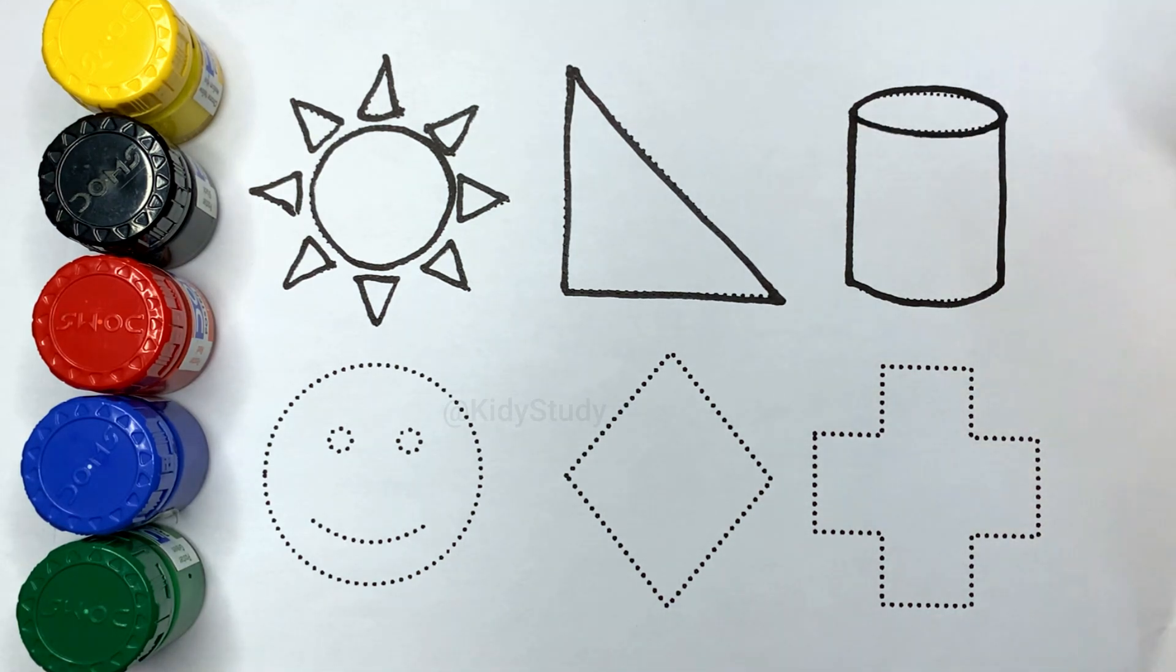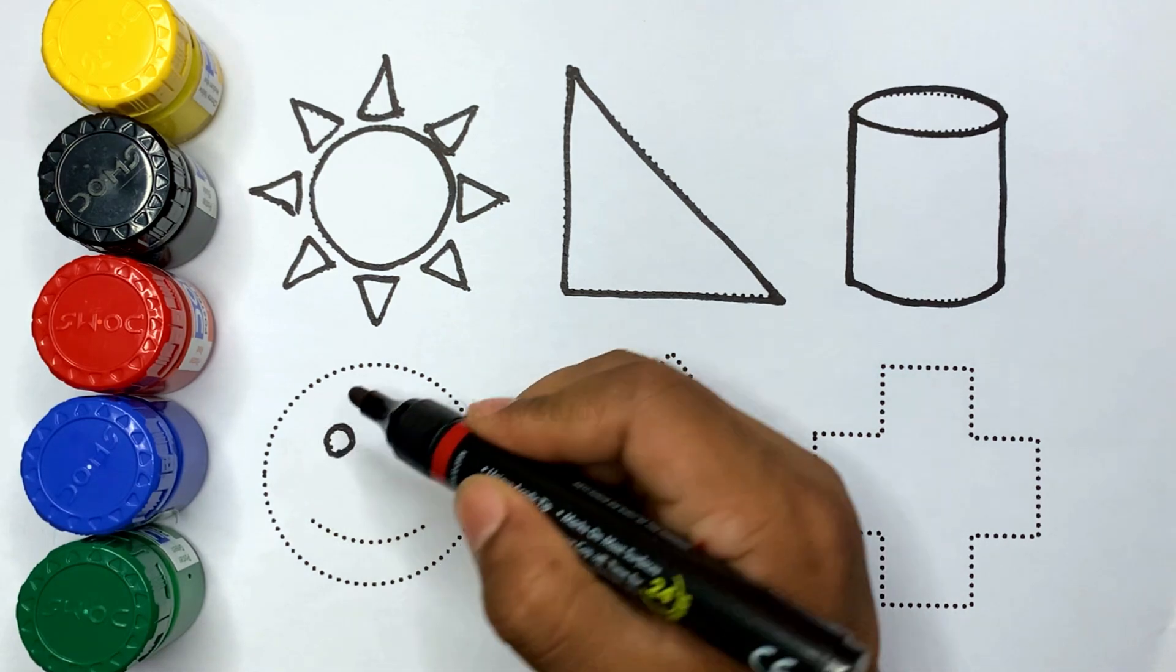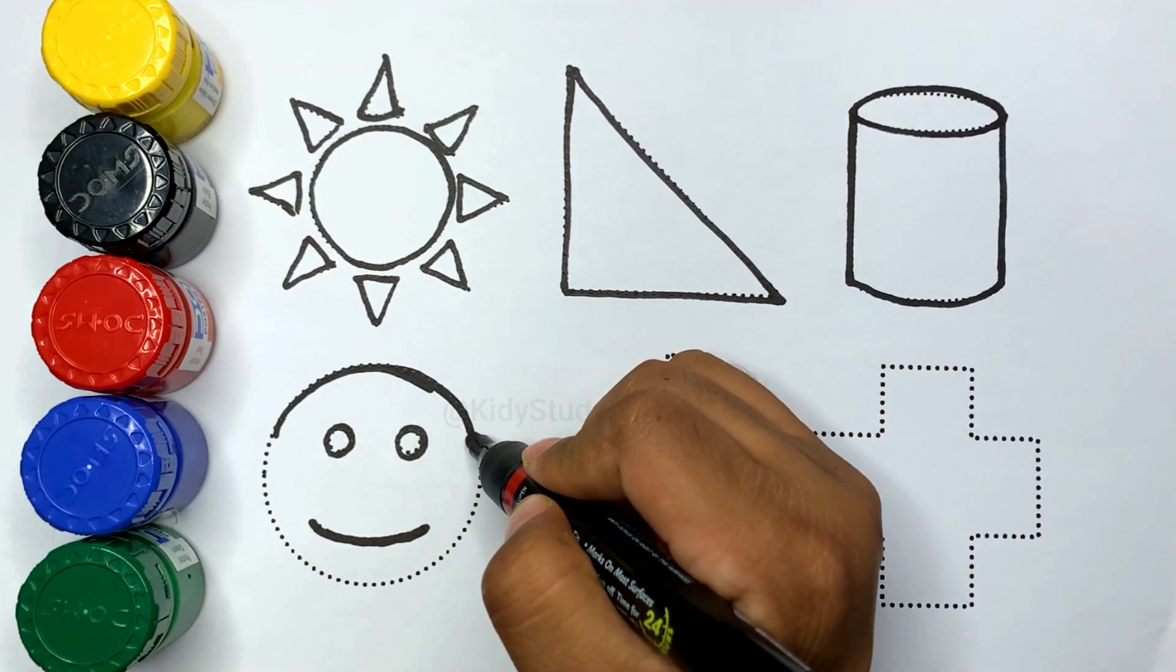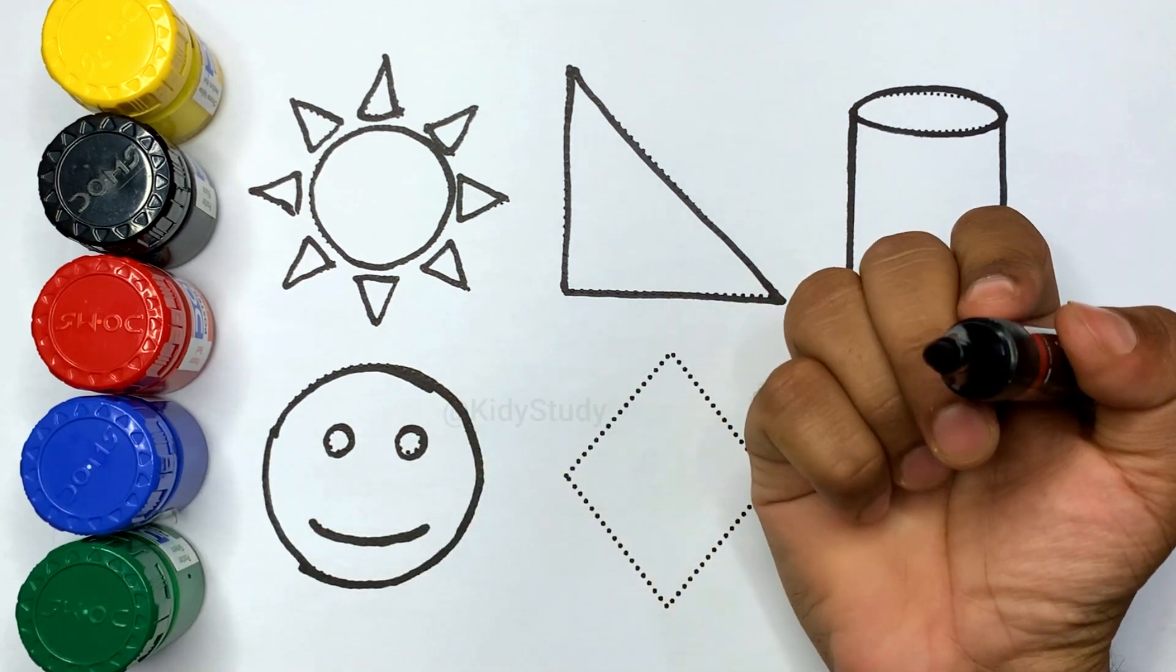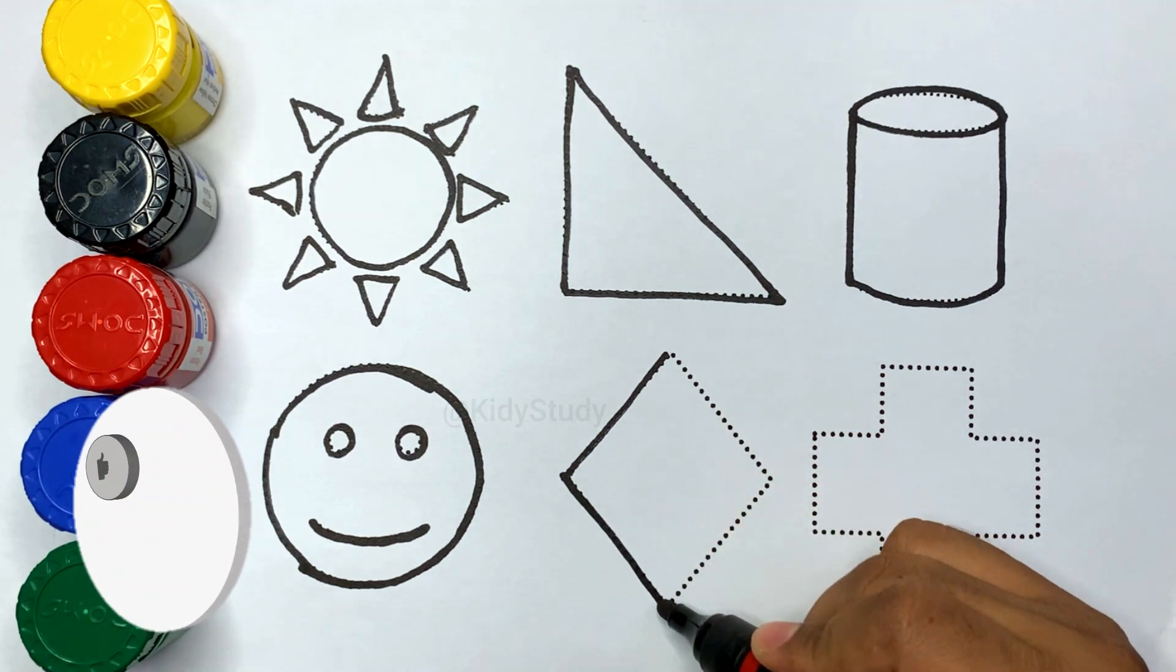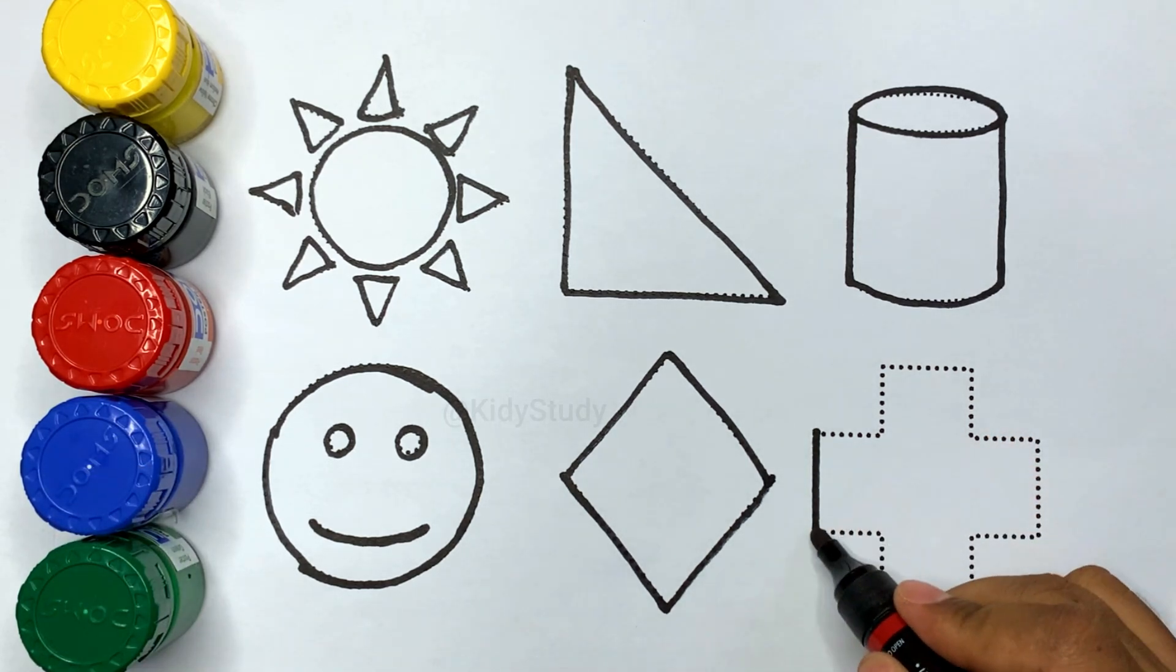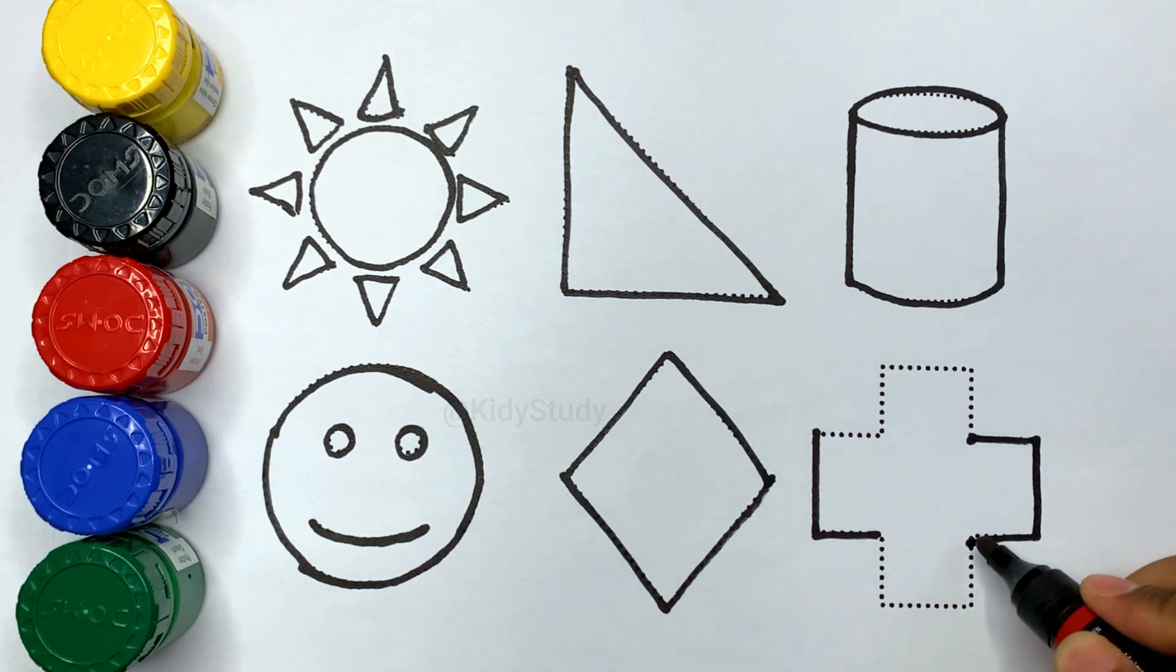Here is cylinder. Here is a smiley face. Here is a diamond. Here is a cross.